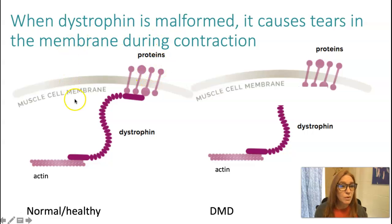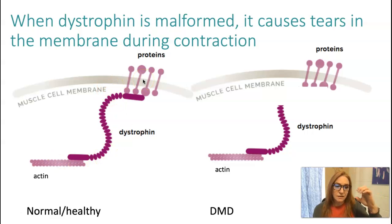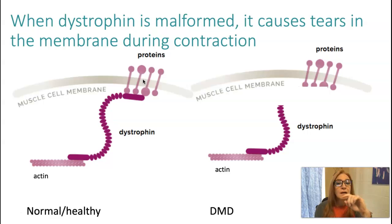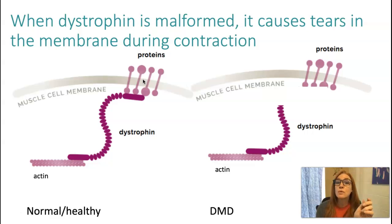Dystrophin is a protein that acts like a rope or a boat anchor that attaches the outermost layer of actin inside of a muscle cell to that muscle cell's membrane. Muscle cells are arranged in bundles inside the muscle fascicles. The outermost layer of actin is attached to the membrane so that when the muscle contracts, the cell membrane and the cell's interior contract smoothly with the rest of the muscle cells.